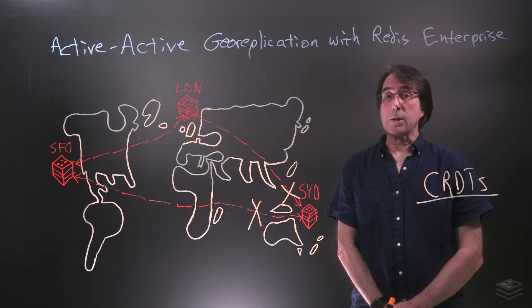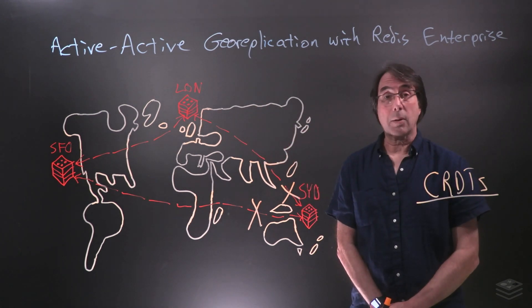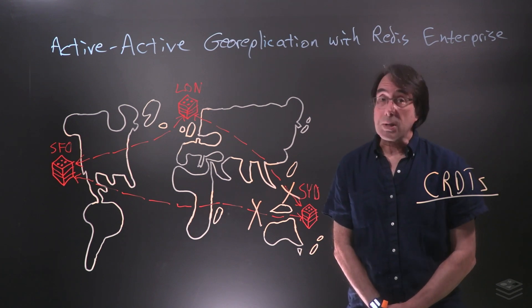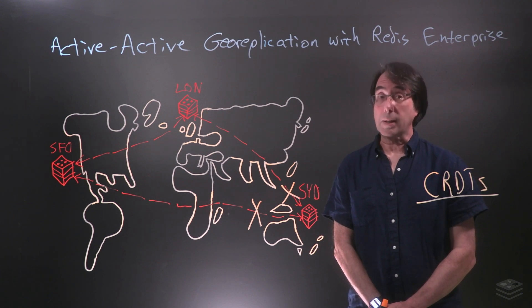What Redis Enterprise will do is store all the changes made in San Francisco and London, and when Sydney comes back online, those changes will be sent to the Sydney replica and everything will be consistent again.